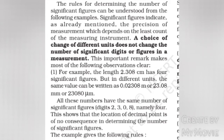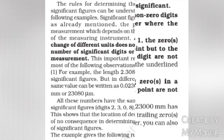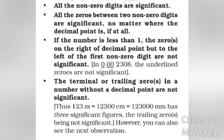The example gives the following rules. Rule 1: All the non-zero digits are significant. Rule 2: All the zeros between two non-zero digits are significant, no matter where the decimal point is, if at all.